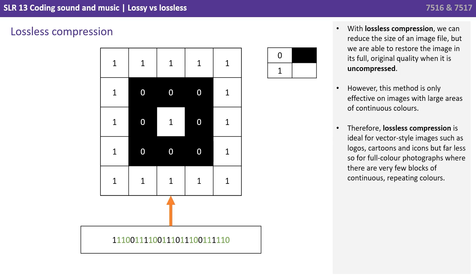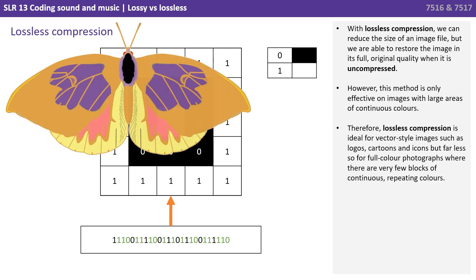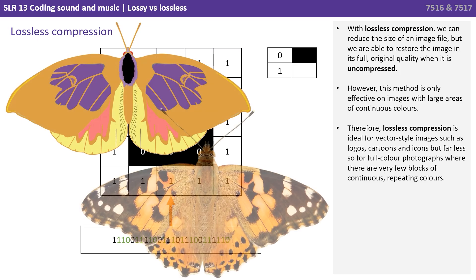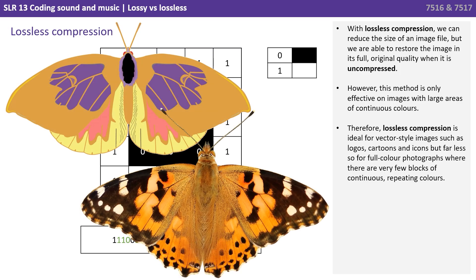However, this method is only effective on images with large areas of continuous colour. Therefore, lossless compression is ideal for vector style images such as logos, cartoons and icons, but far less so for colour photographs where there are very few blocks of continuous repeating colour.